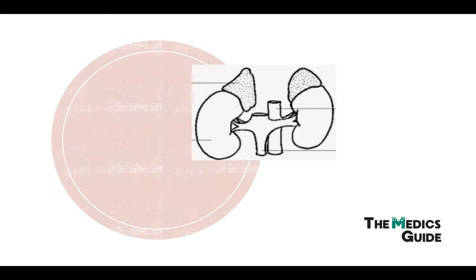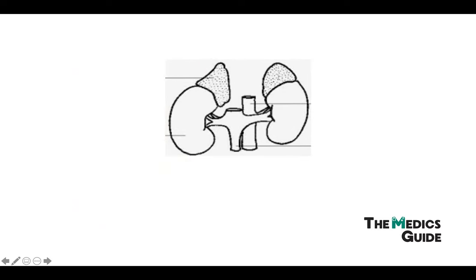For those of you who don't remember, the adrenal glands are endocrine glands that sit on top of the kidneys and produce a variety of hormones, including two very important ones: cortisol and aldosterone.